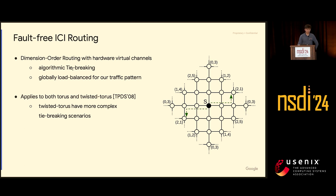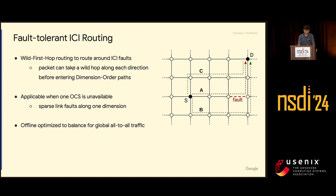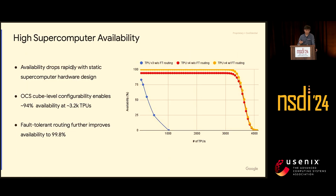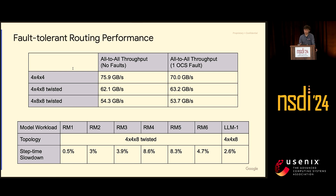In the fault-free case we use dimension order routing: every node communicates with every other following x, y, z order in the torus — this applies to torus and twisted torus. In the fault-tolerance case, we have a special routing algorithm called wired first hop: in the first hop a packet can go in any direction, and following that it follows conventional dimension order routing. This allows us to tolerate faults at the OCS level, boosting availability from 94% to 99.8%. The fault-tolerance scheme also doesn't have much performance degradation — in some cases it even performs better than the fault-free case, because torus networks can be difficult for traffic to traverse optimally.